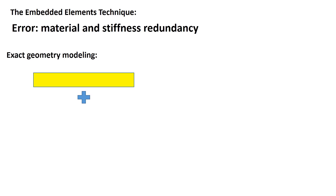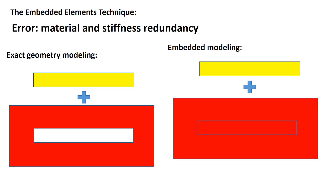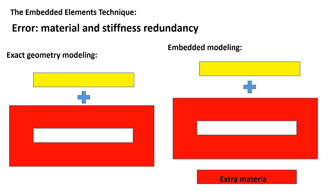Material redundancy is the most significant concern in embedded element technique. In exact modeling of the geometry, we model embedded and cut host parts. Instead, in embedded technique, we model these two complete parts. This amount of the material is redundant in our model and causes extra stiffness and strength in the results. If the embedded volume fraction is low, or if the host region is significantly softer than the embedded region, this error can be ignored.